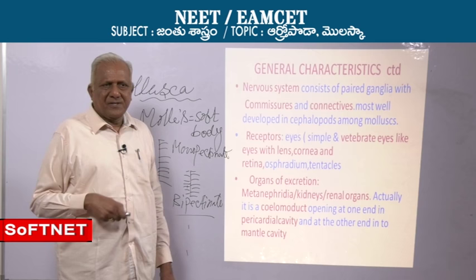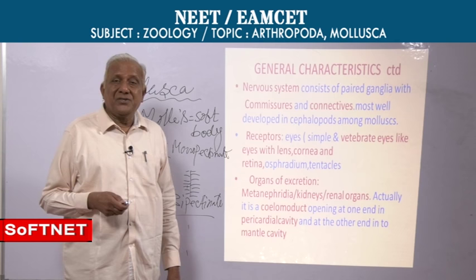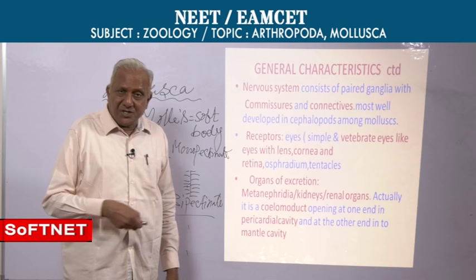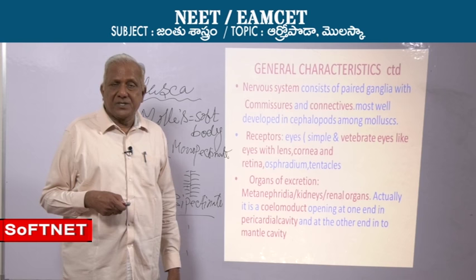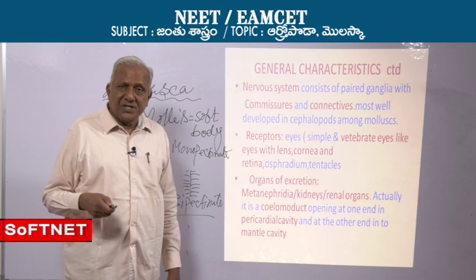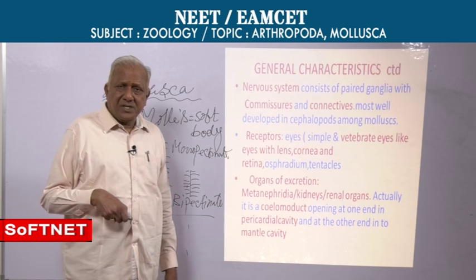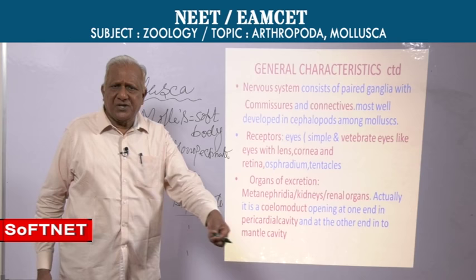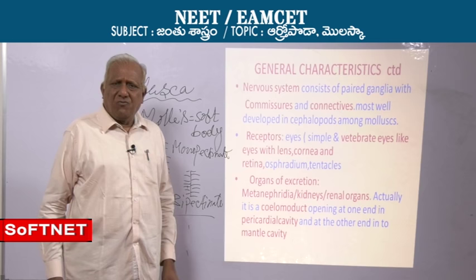You find eyes. These may be simple or eyes like the eyes of vertebrates, as seen in cephalopods like Loligo and octopus, where the eye has a retina, lens, and cornea. You also find tentacles. The osphradium is a unique chemoreceptor meant for testing the purity of water. Generally it is only one, as in the case of Pila.